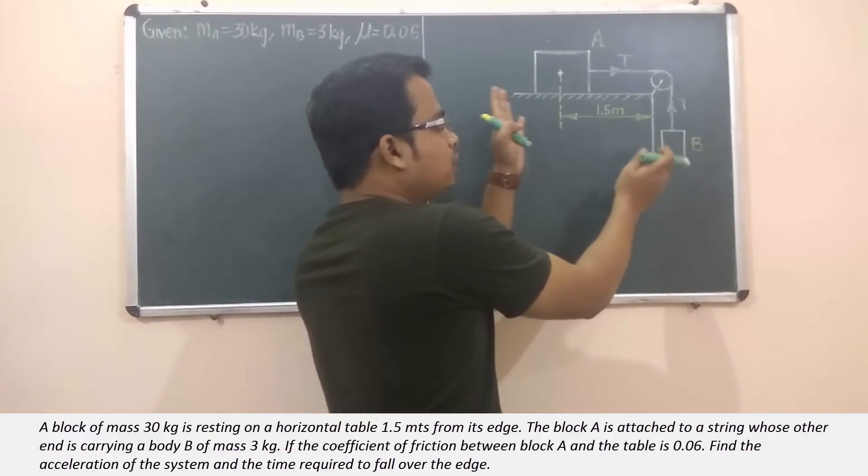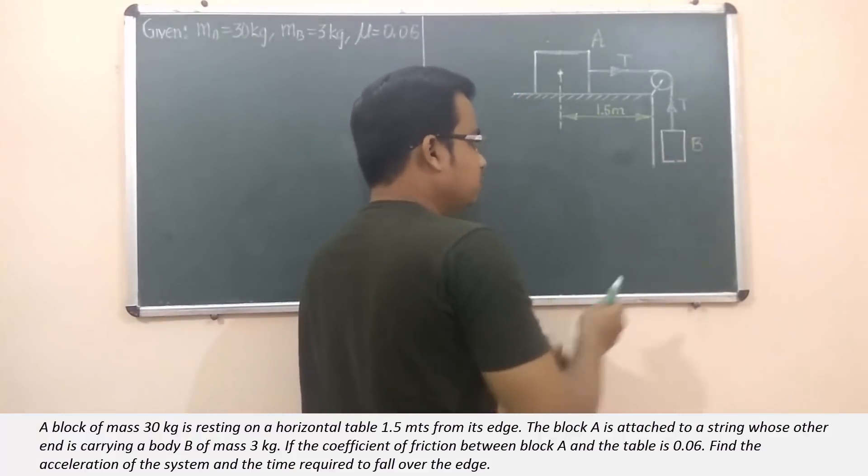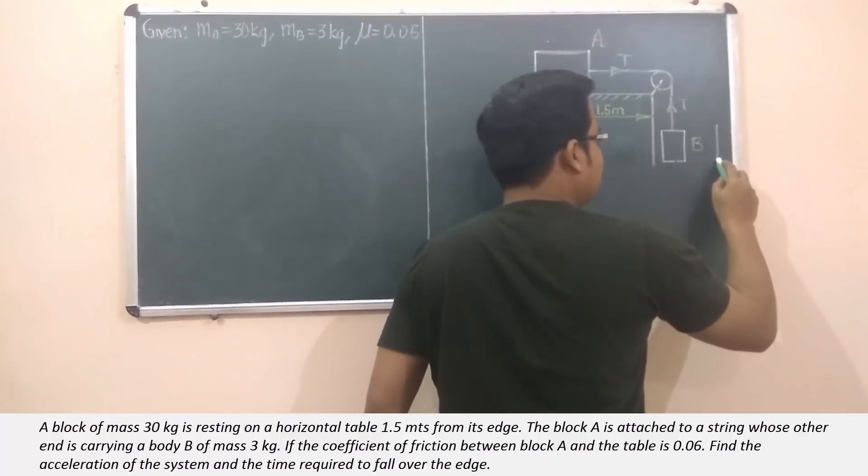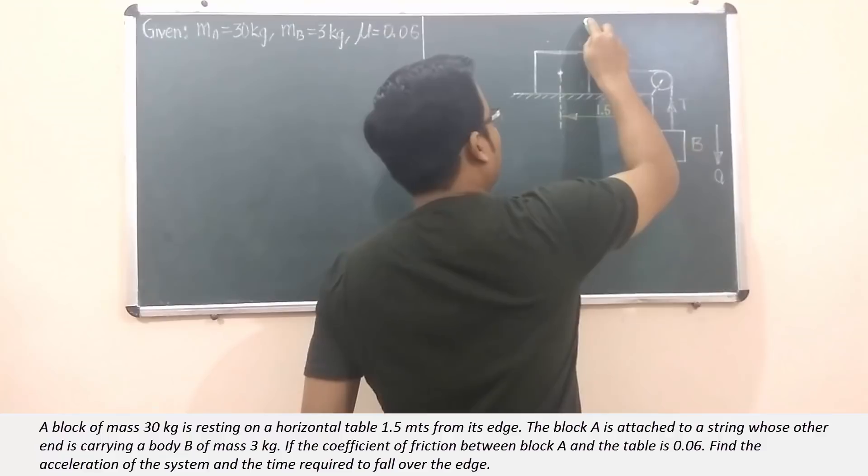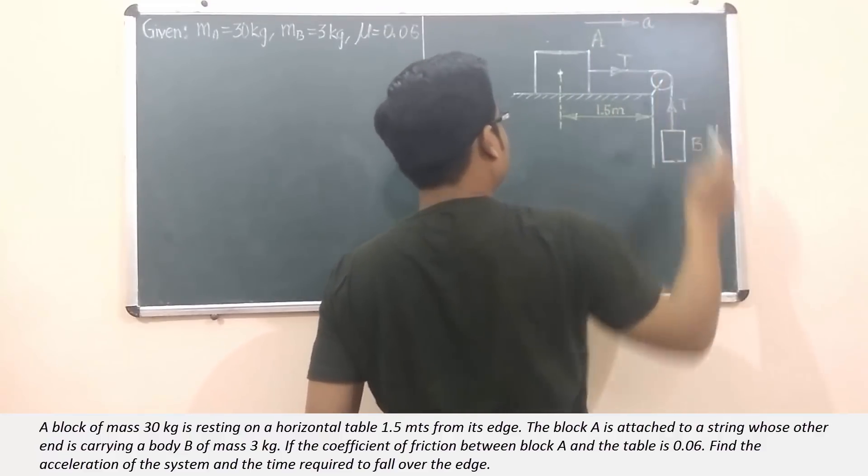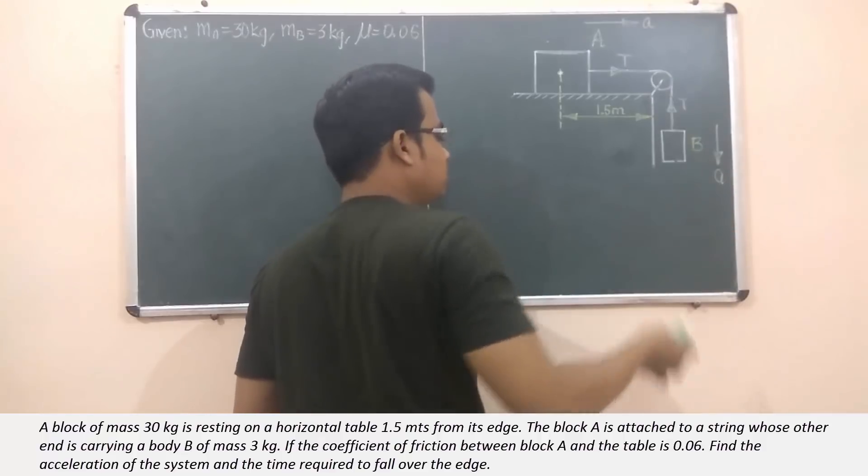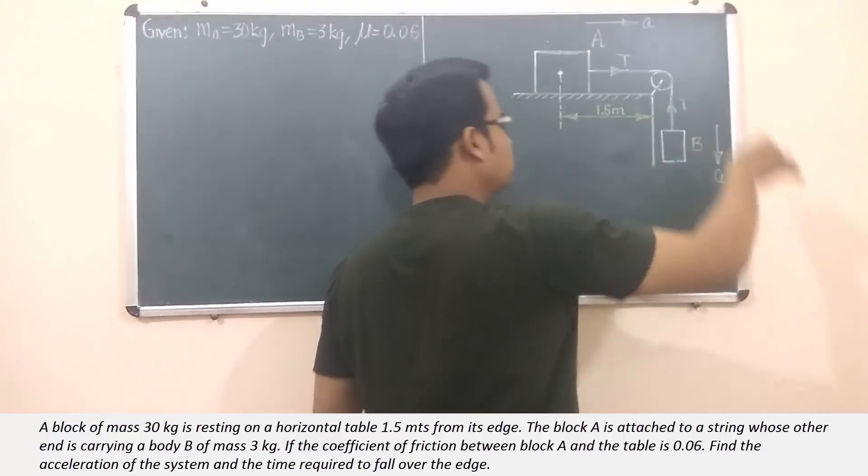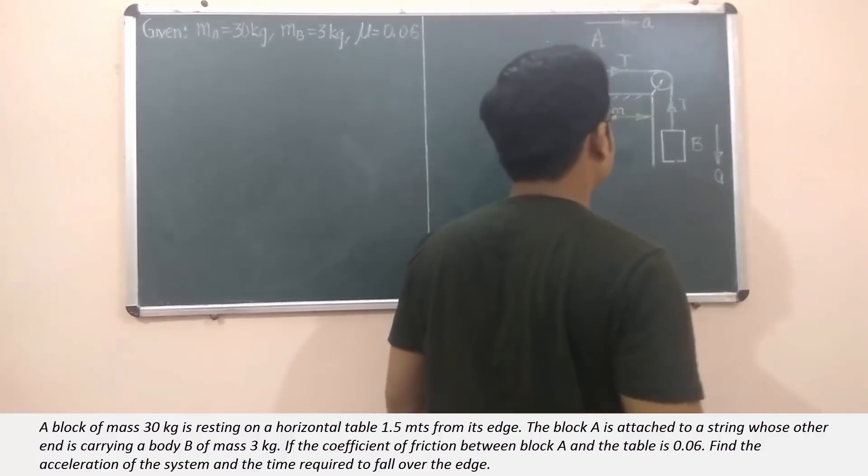When this system is released from the state of rest, what's going to happen is this: this block will travel in the downward direction with an acceleration a, and this block will travel in the right-hand side direction again with the same acceleration a. Both of them are going to have the same accelerations, their axes may be different - this is along the y-axis, this is along the x-axis.